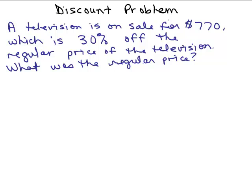Alright, let's do this discount problem. The television is on sale for $770, which is 30% off the regular price of the television. What was the regular price?